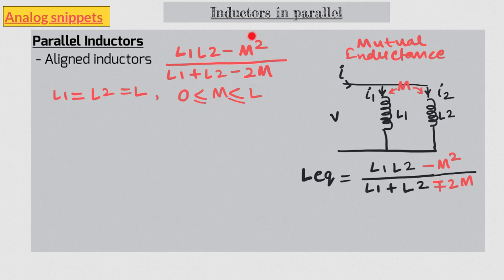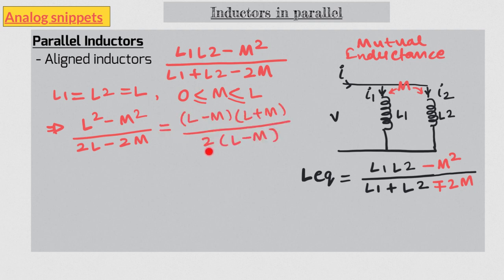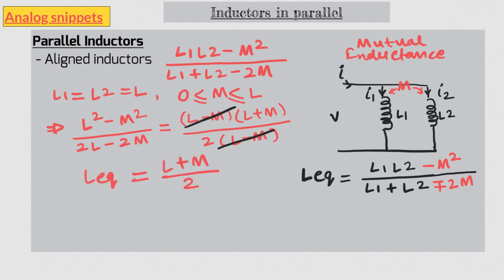So let's see what happens to this equation when both inductors are equal. In the simplification step, I have used the identity A² − B² = (A + B)(A − B). We see that (L − M) cancels out in numerator and denominator, and finally we get a very simple equation: (L + M) / 2.